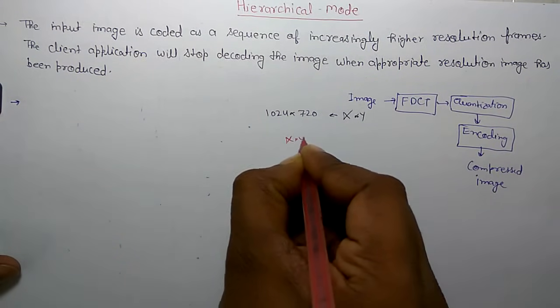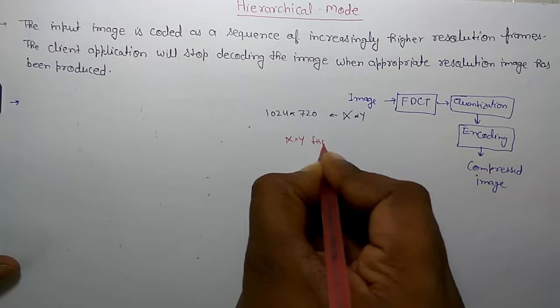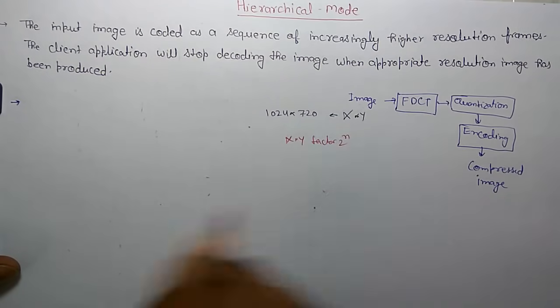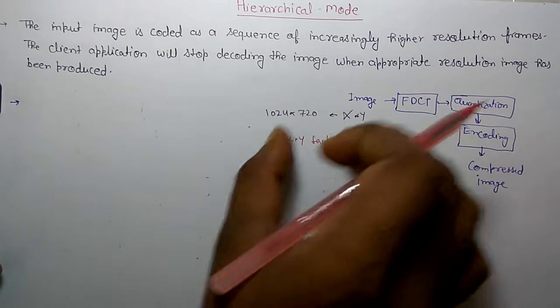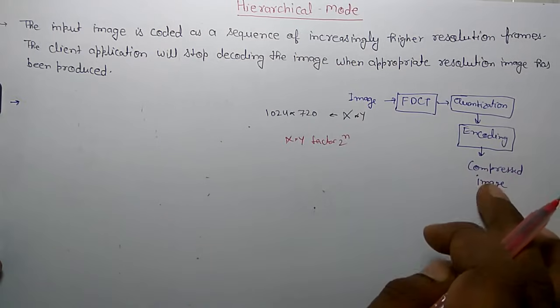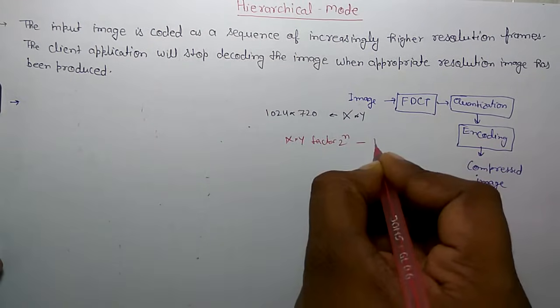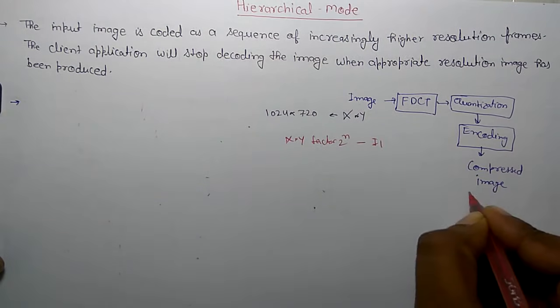You can use X cross Y resolution divided by factor 2 to power N and then compress the image. For example, image generated by I1.